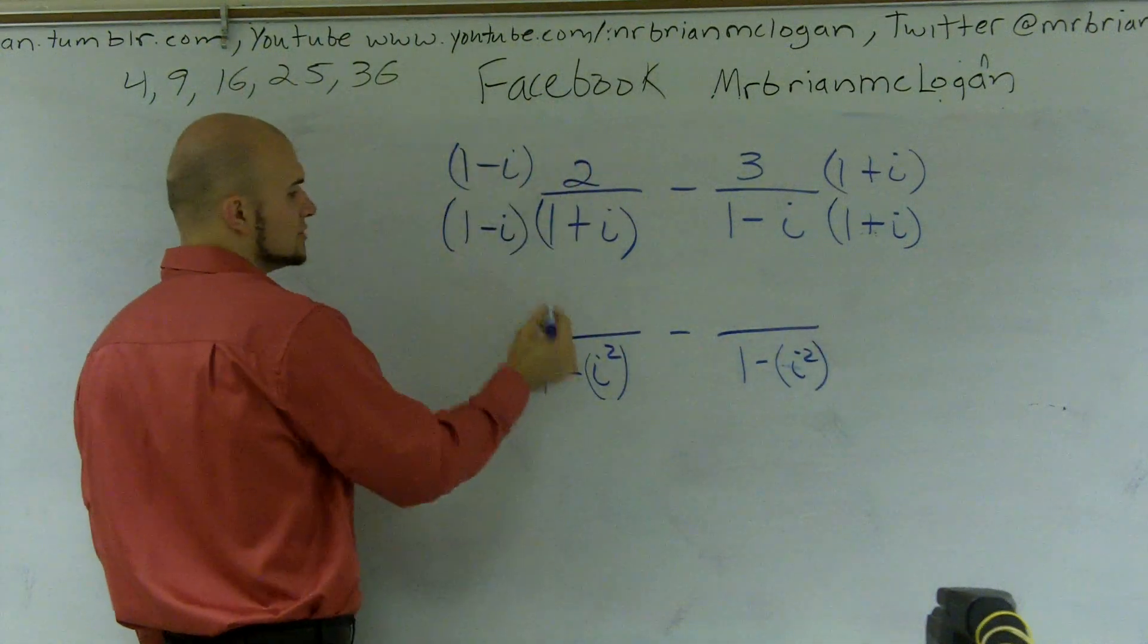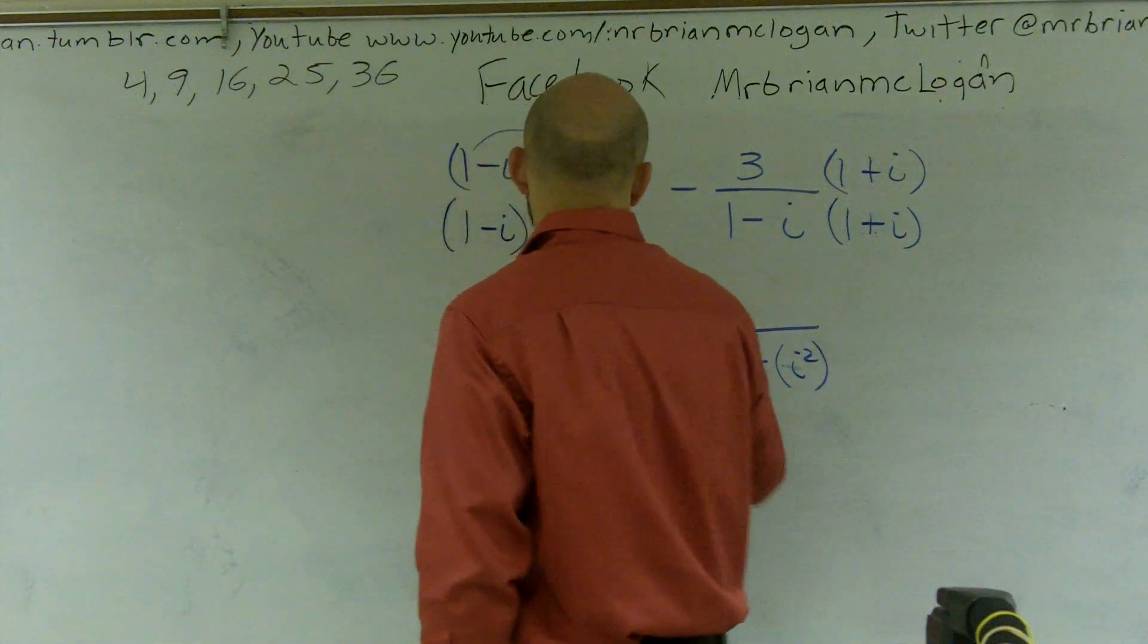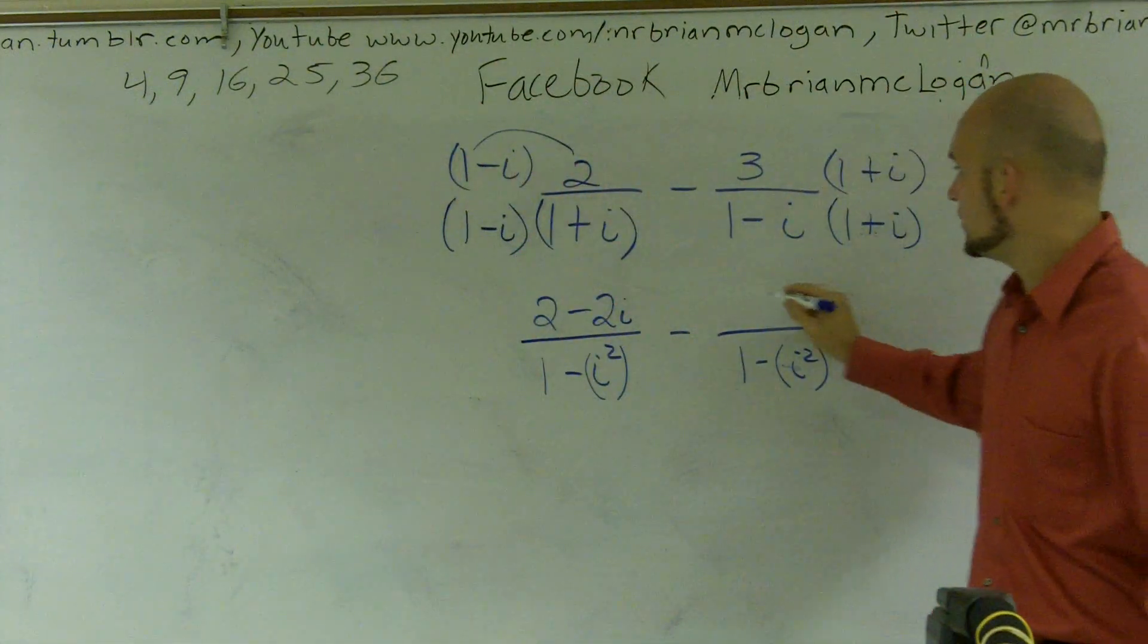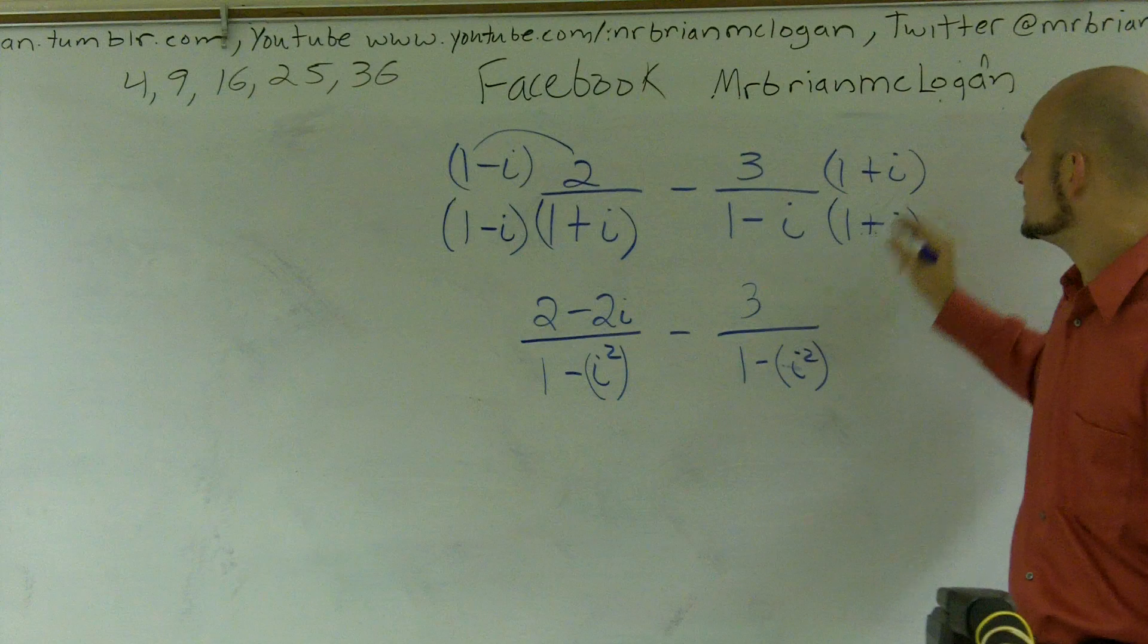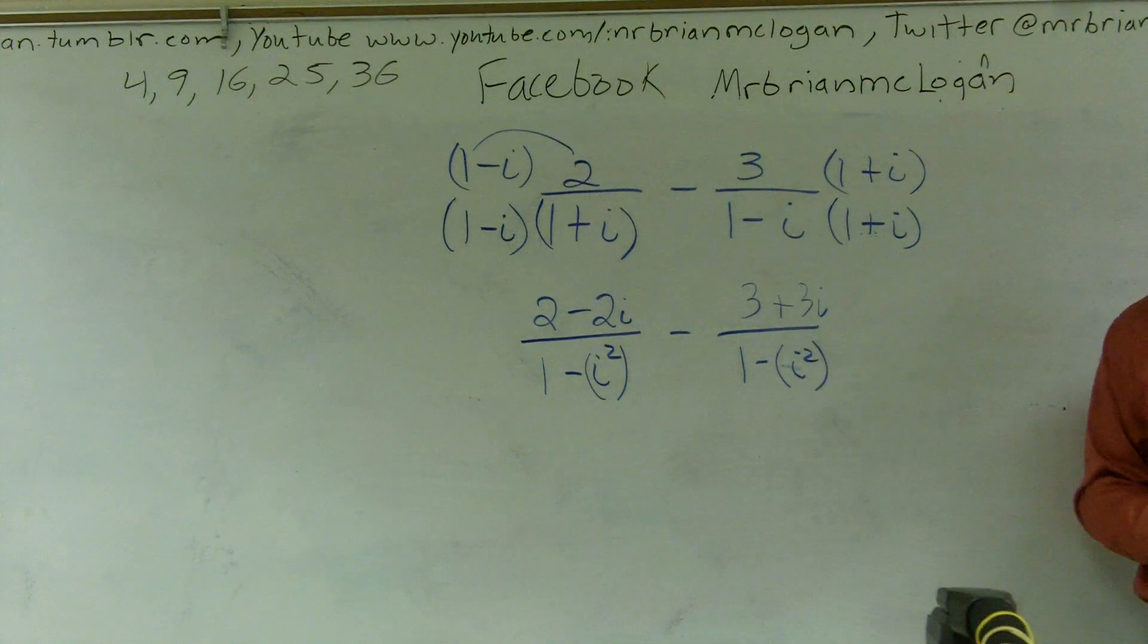On the top, you're just going to do a distributive property. Two times one is two. Two times negative i is a negative two i. Three times one is three. And three times i is a positive three i.